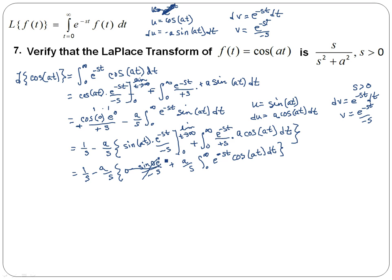So the first part drops out and I only have one term. I have negative a over s times a over s, which combines to give negative a² over s² times this integral. This is important because comparing it to the initial integral — e to the negative st times cosine(at) — that integral is the same as our original integral.